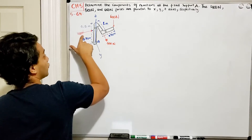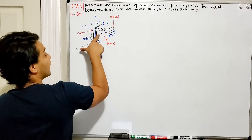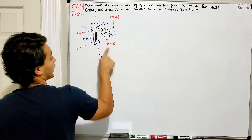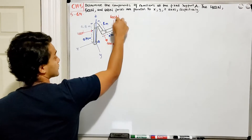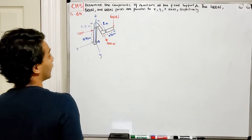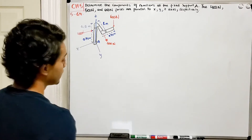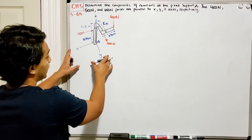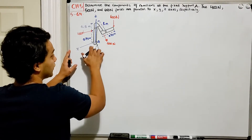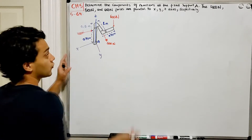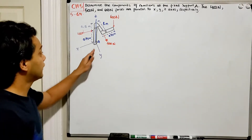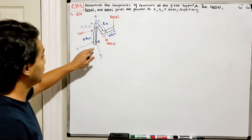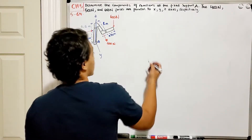We have 400 Newtons applied at one part of the tube, then 500 Newtons and 600 Newtons going straight down. In order to determine the components of reactions at A, we're going to redraw the free body diagram and represent the fixed support with all the reactions that it provides.